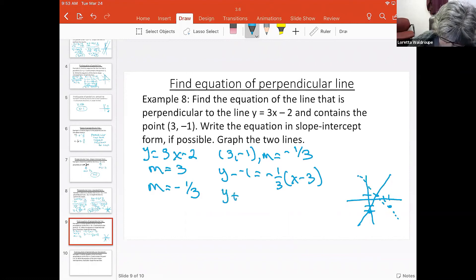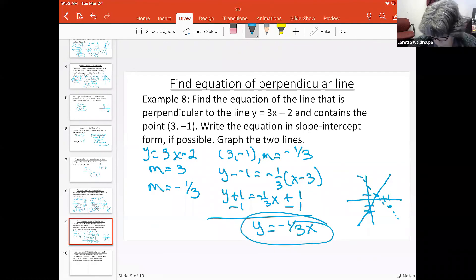Minus the negative is plus, and then distributing my negative one third, and then if I subtract one from both sides, I get negative one third x. So actually this line should have been more there to be more perpendicular.